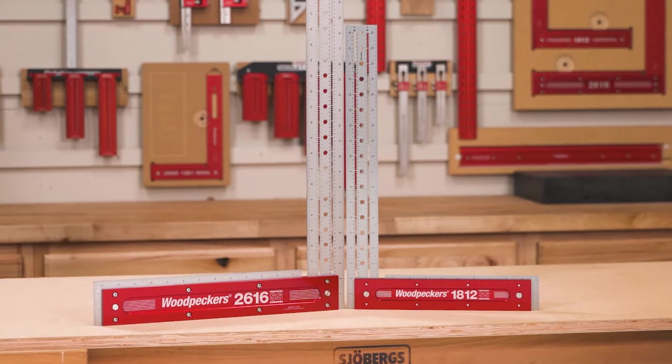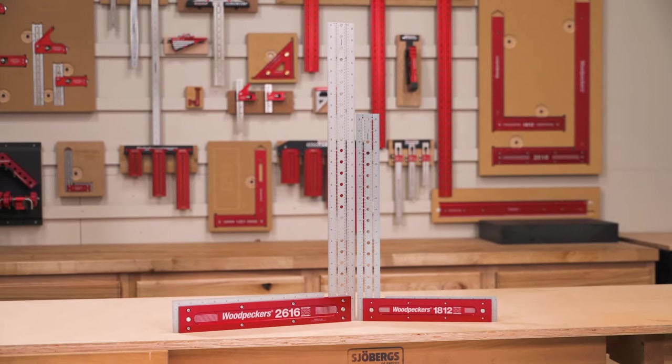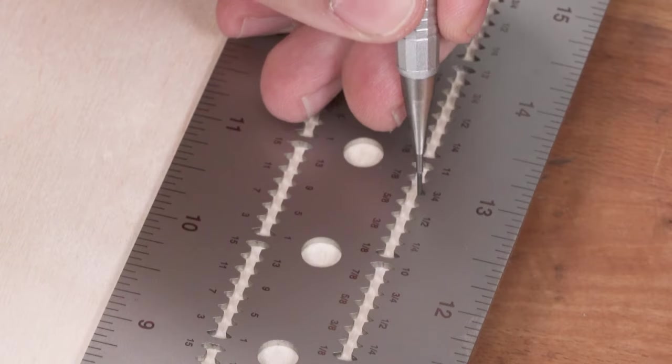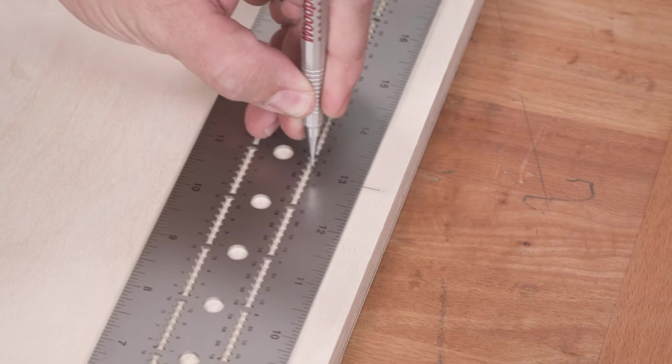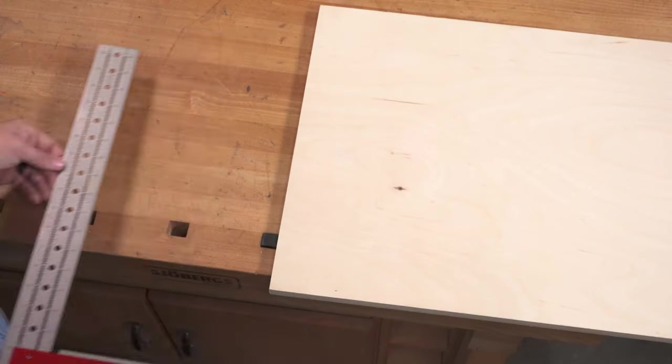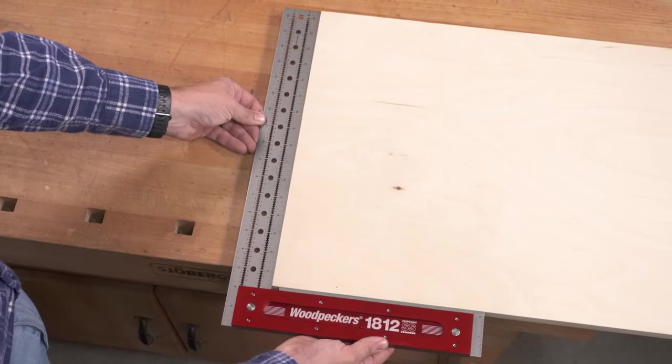When laying out sheet goods or larger panels, nothing matches our two larger squares for convenience and accuracy. Either square is the perfect reference tool to lay out precise lines for wide panel cross cuts and check that the ends of your panels come out dead on accurate.